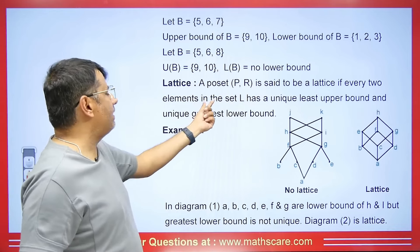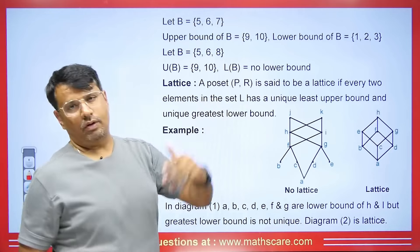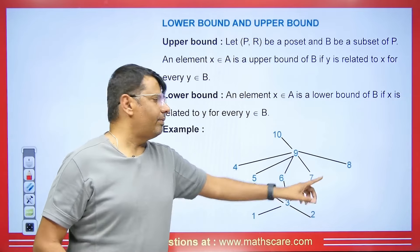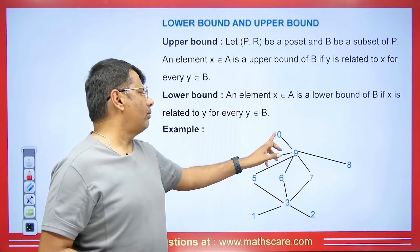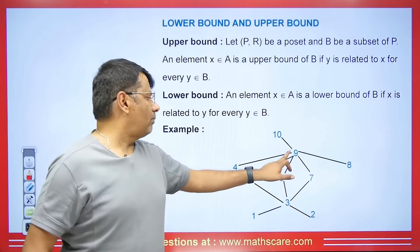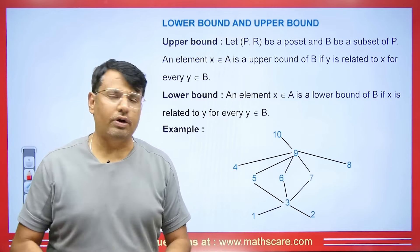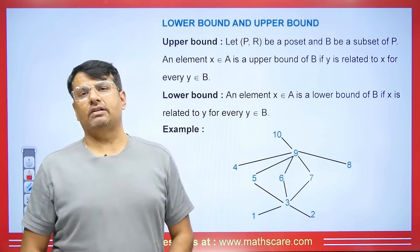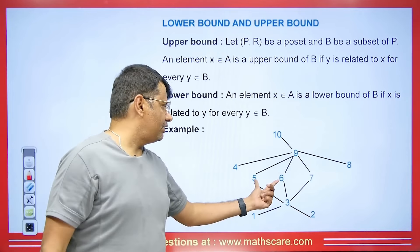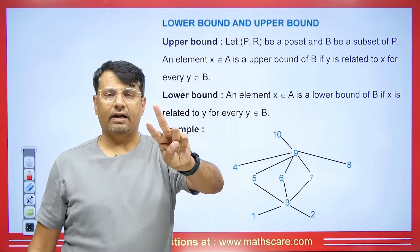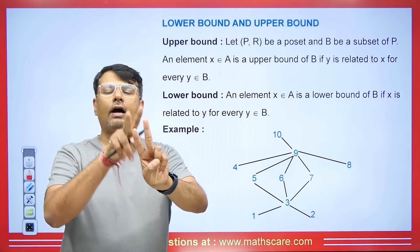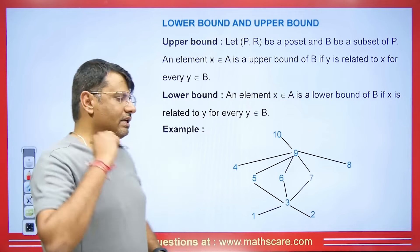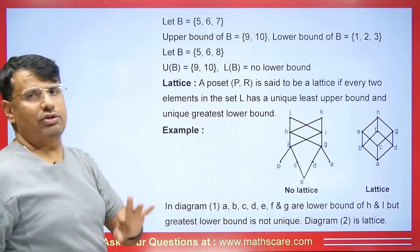Now we will talk about lattice. Any partial order set is said to be a lattice if every two elements in the set L have a unique least upper bound and a unique greatest lower bound. When discussing lattice, we take only two elements at a time — either 5 and 6, or 6 and 7, or 5 and 7. For any two elements, their least upper bound and greatest lower bound should exist and be unique.